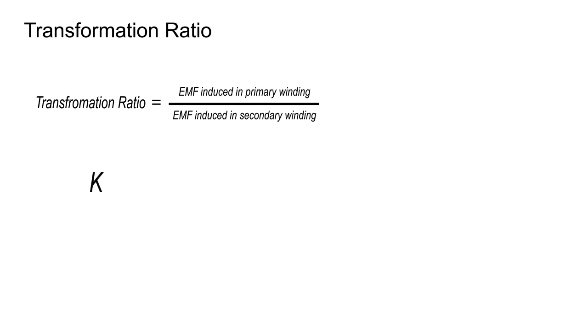Another important expression for transformers is the transformation ratio, which is the ratio of the induced voltages in the two windings and is represented by K, i.e., K equals E1 upon E2 equals N1 upon N2.